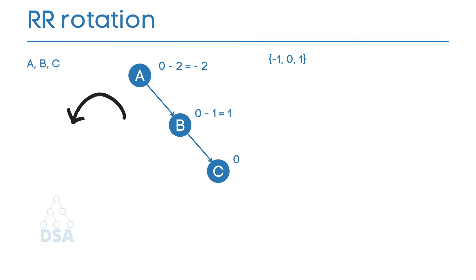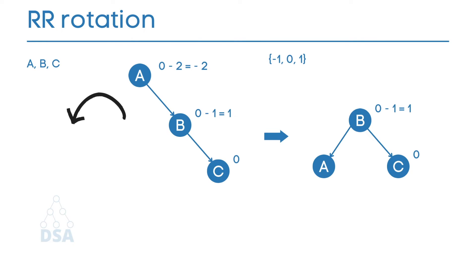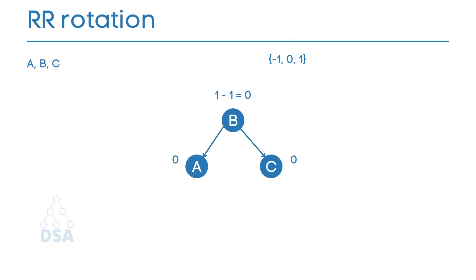To balance the tree we perform a left rotation (RR rotation) in an anti-clockwise direction. The median element B becomes the root, and A is brought down as B's left child. Recalculating balance factors: C and A have no subtrees so their balance factors are 0. B now has one node in the left subtree and one in the right subtree, giving 1 minus 1 equals 0. This is now a balanced binary search tree.